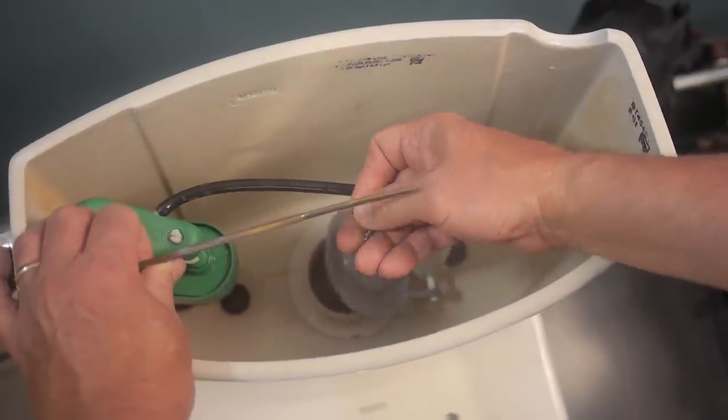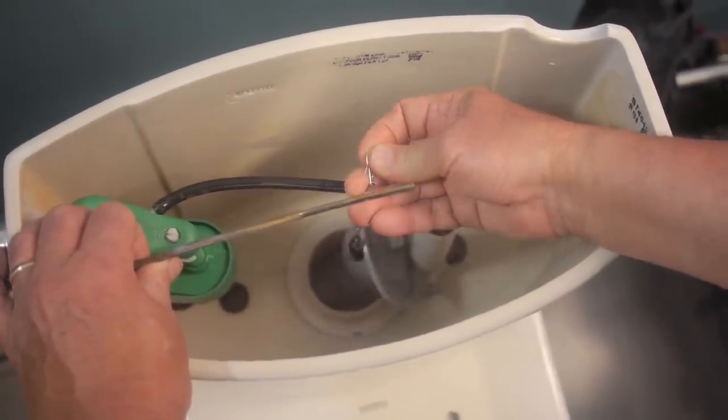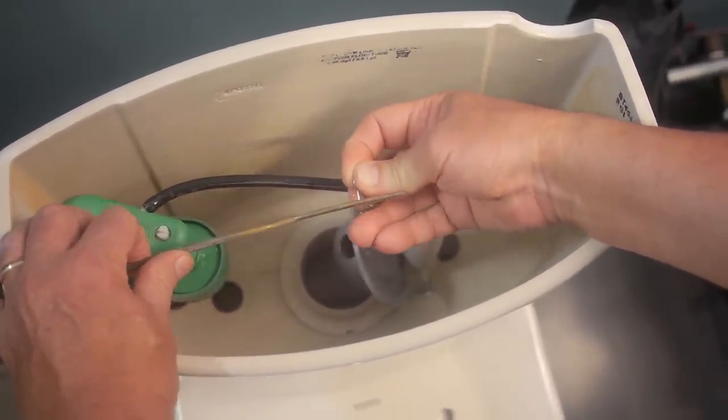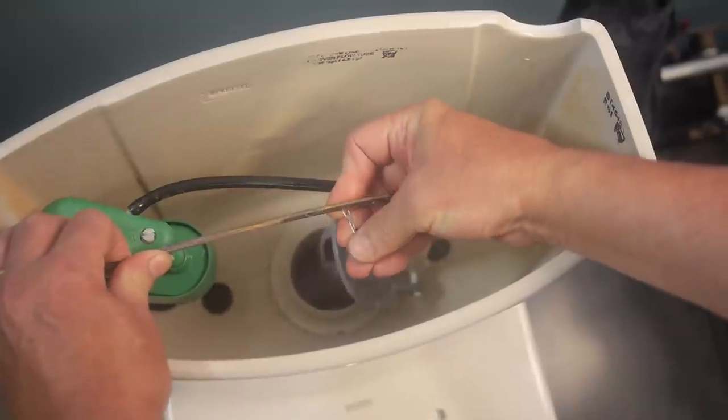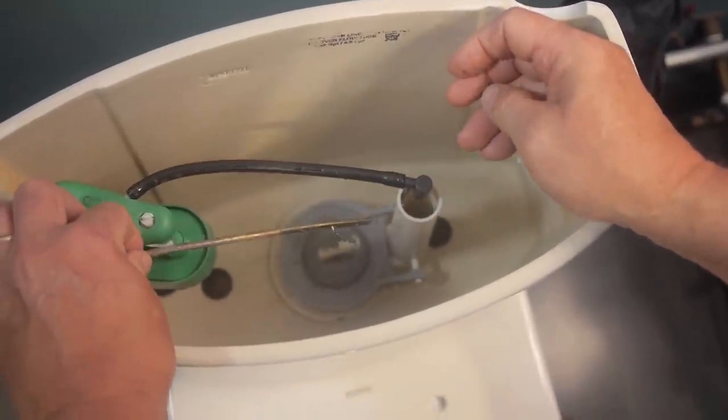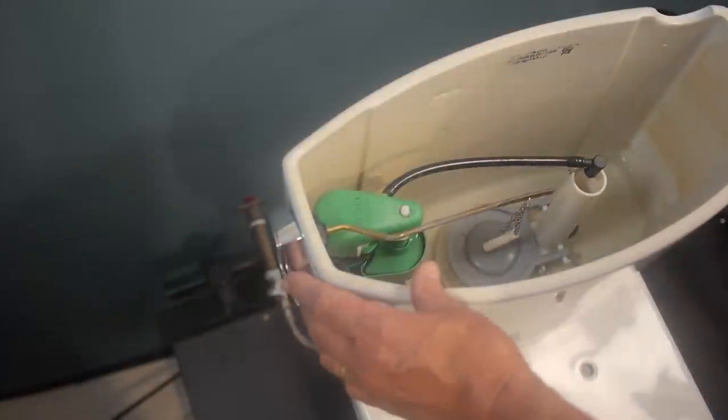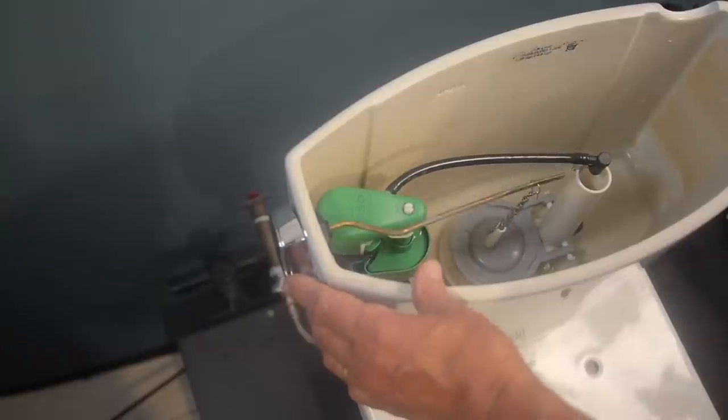Then, connect the flapper chain to the trip lever arm. The length of the chain is the most important thing. It should have about a quarter of an inch of slack when the lever and the flapper are in the closed position.